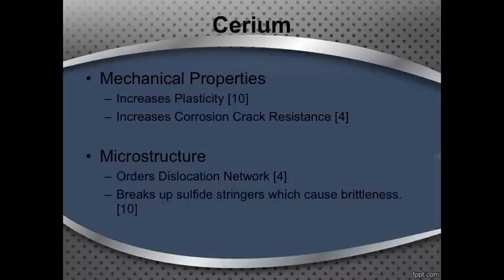Cerium is an element that can be added if you are trying to increase plasticity and improve corrosion crack resistance. The microstructural effects that cerium has on steel include ordering dislocation networks, which contributes to corrosion crack resistance. It also breaks up sulfide stringers, which cause brittleness, and this again contributes to plasticity.